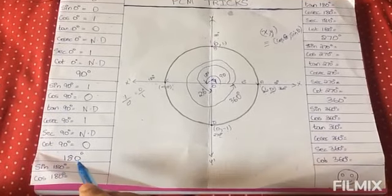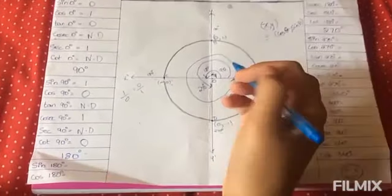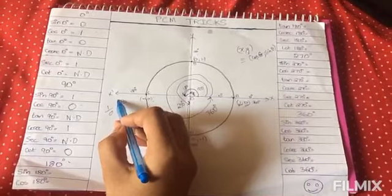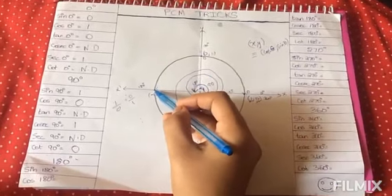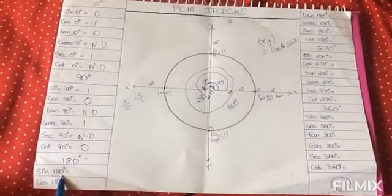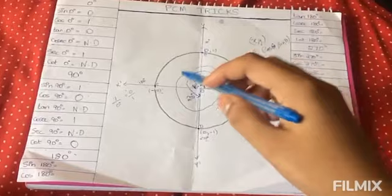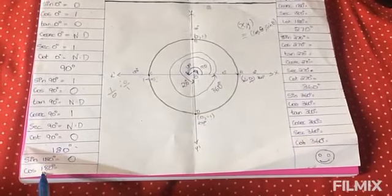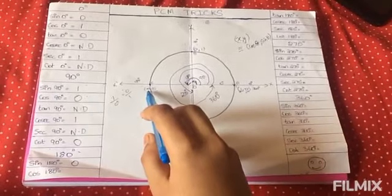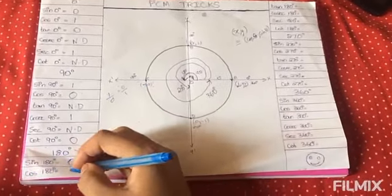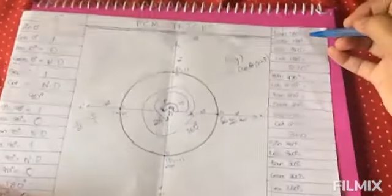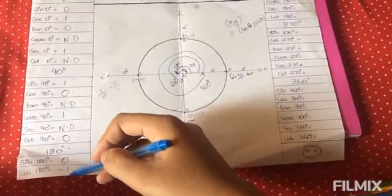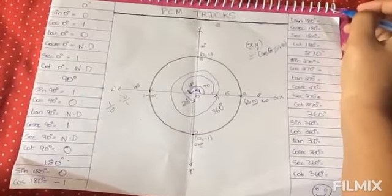Next, let's find the value of trigonometric ratios with respect to the angle 180 degree. The angle between the positive x-axis and negative x-axis is 180 degree. So we have to find the value at point C. Sin 180 degree is nothing but the value of ordinate at point C, that is 0. Cos 180 degree is the value of abscissa at point C, which is minus 1. So cos 180 is minus 1. Tan 180 degree is sin 180 by cos 180, which is 0 by minus 1. 0 by any number is 0, so tan 180 is 0.